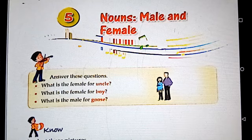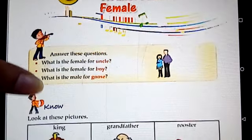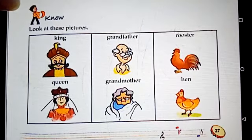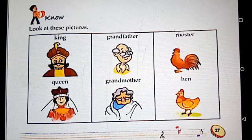Now look at your book. Some pictures are given, so have a look at these pictures: king, grandfather, rooster, queen, grandmother, hen. These all are nouns.